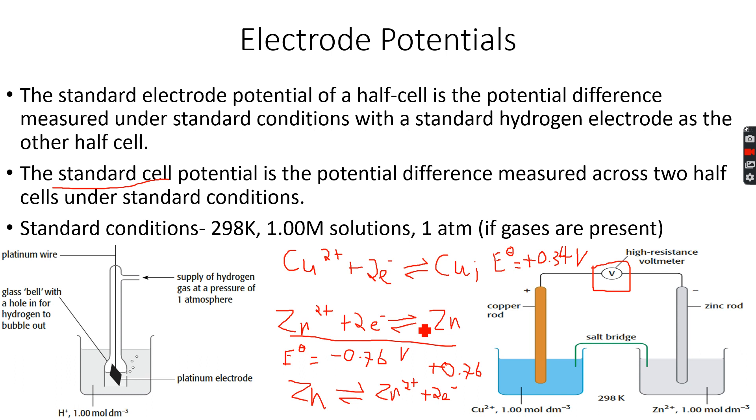You can see here that the forward reaction of this equation is the back reaction of this equation, so it will have a value of plus 0.76. After we have reversed, we add the two values.